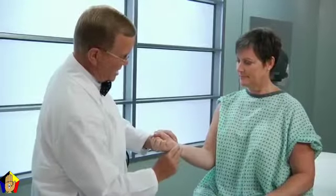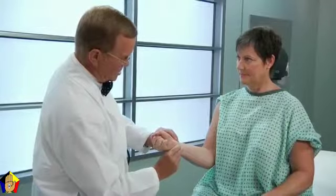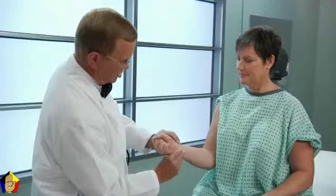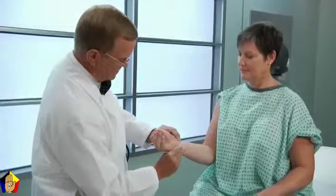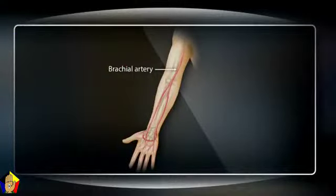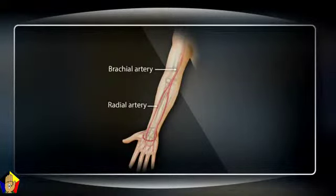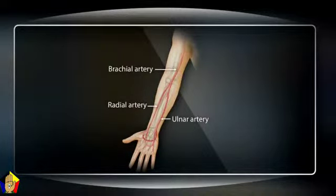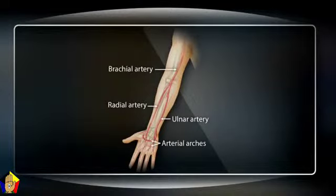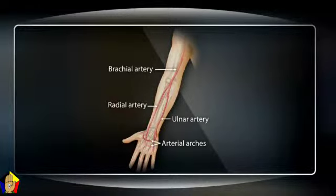When arteries lie close to the body surface, you can feel their pulsation. In the arms, arterial pulses are palpable in three locations: the brachial artery at and above the bend of the elbow, medial to the biceps tendon; the radial artery on the lateral ventral surface of the wrist; and the ulnar artery on the medial ventral surface of the wrist, although overlying tissues frequently obscure this pulse. The arterial arches interconnect the radial and ulnar arteries and help protect hand and finger circulation from arterial occlusion.